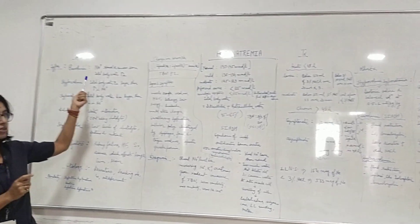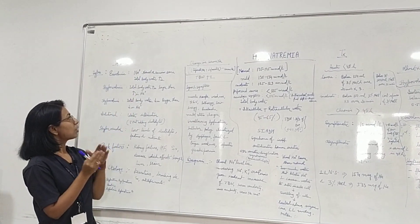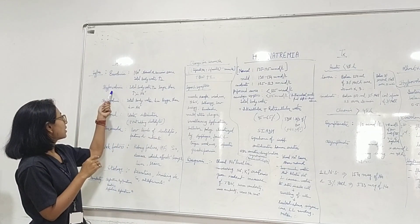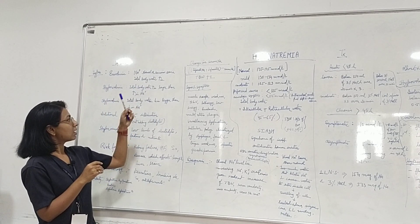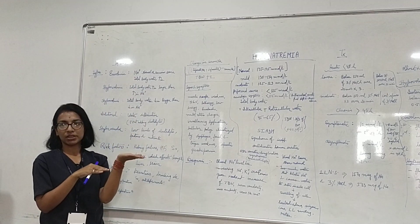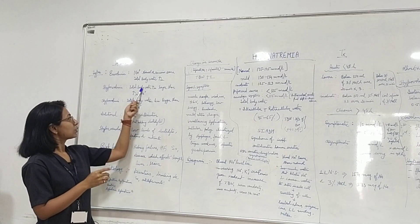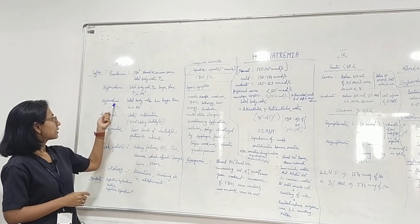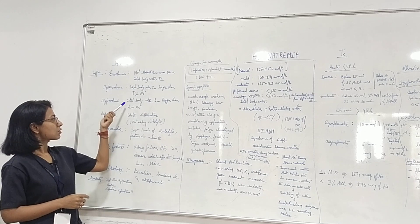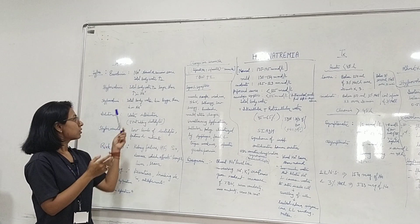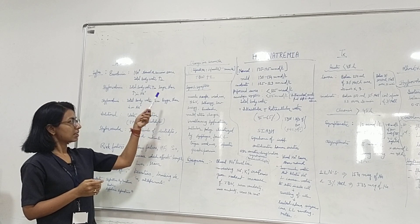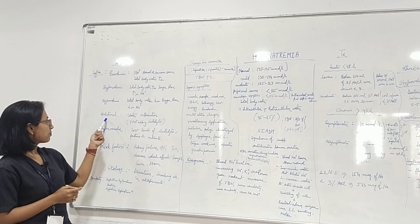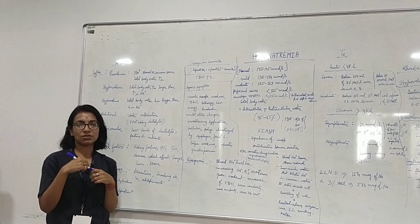Based on volume status, first is euvolemic hyponatremia — total body water increases but sodium concentration remains normal. Second is hypervolemic hyponatremia — the increase in total body water is greater than the increase in sodium concentration. Third is hypovolemic hyponatremia — the decrease in total body water is greater than the decrease in sodium.